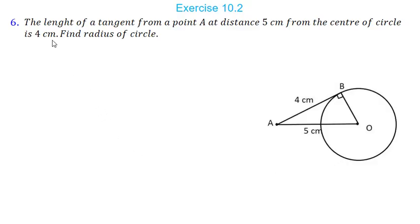Now let us see the sixth problem. The length of tangent from point A at a distance of 5 cm from the center of the circle is 4 cm. Find the radius of the circle. So point A is outside the circle. The distance between point A and the center is 5 cm and the tangent length AB is 4 cm. We have to find the radius. This angle ABO is 90 degrees as the radius is perpendicular to the tangent.